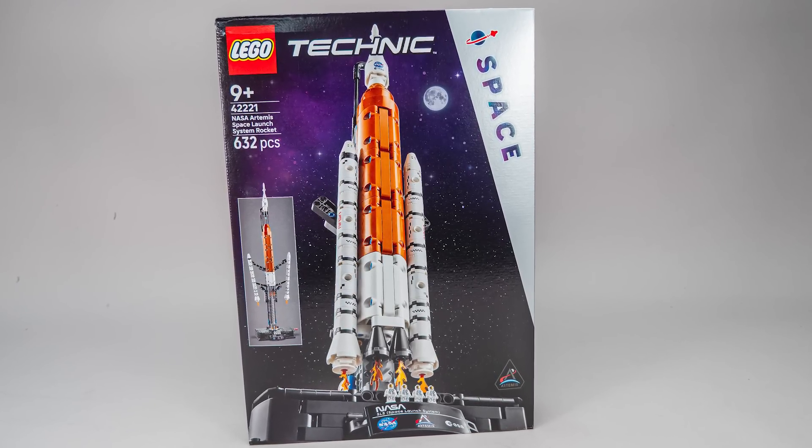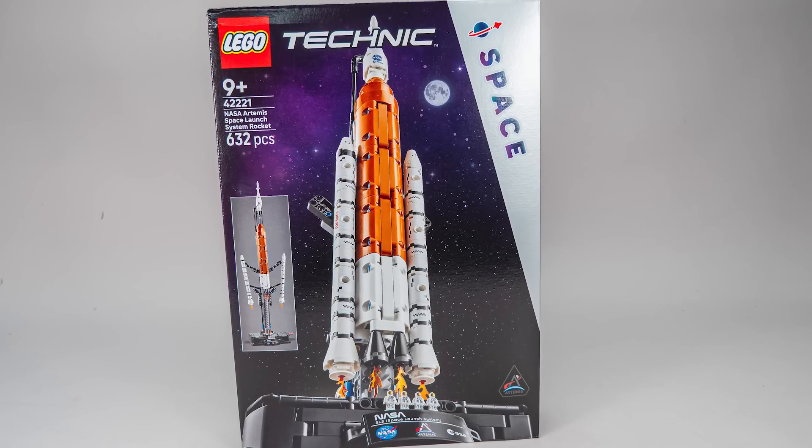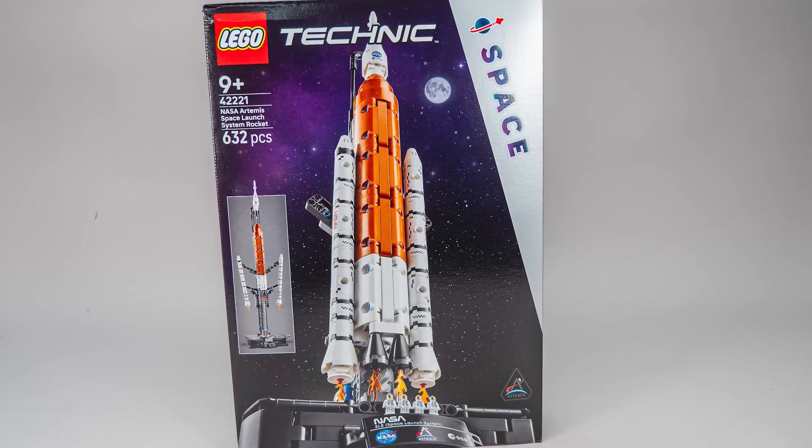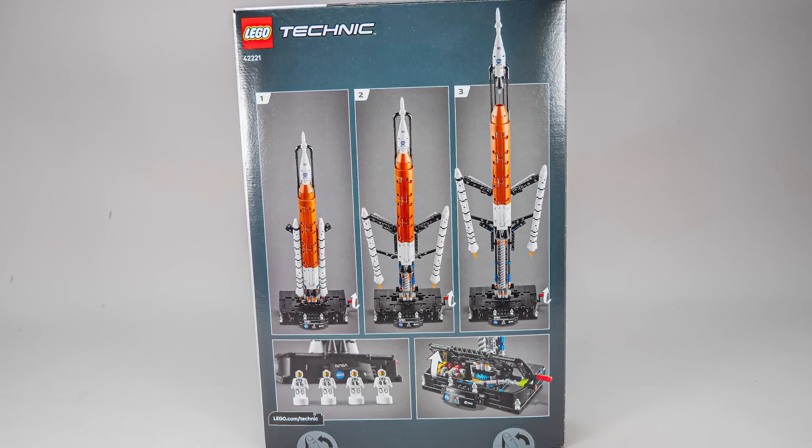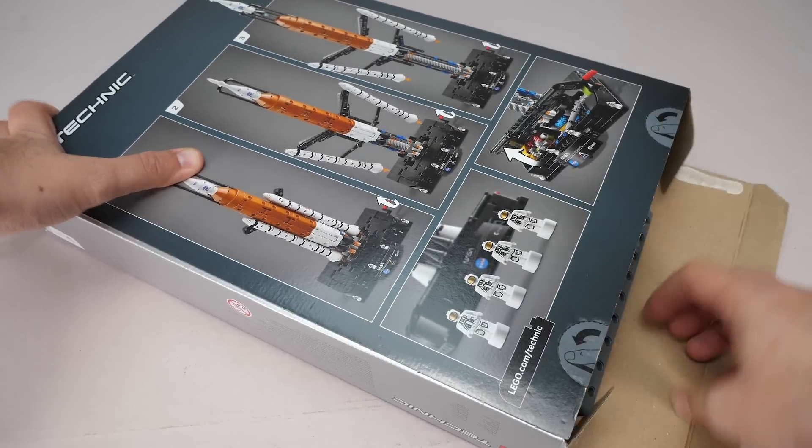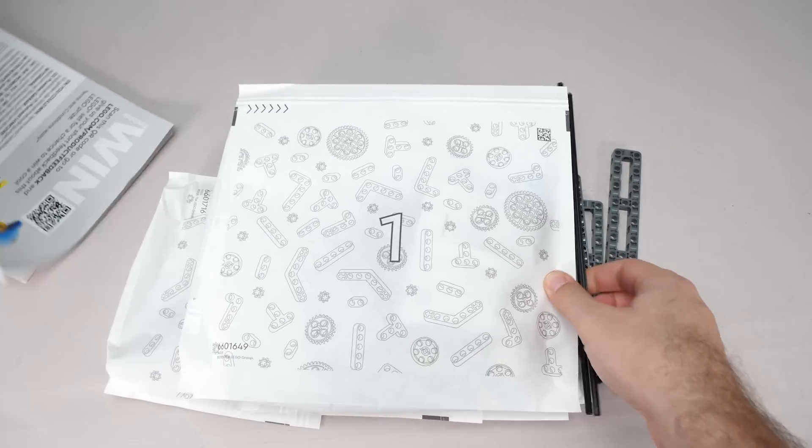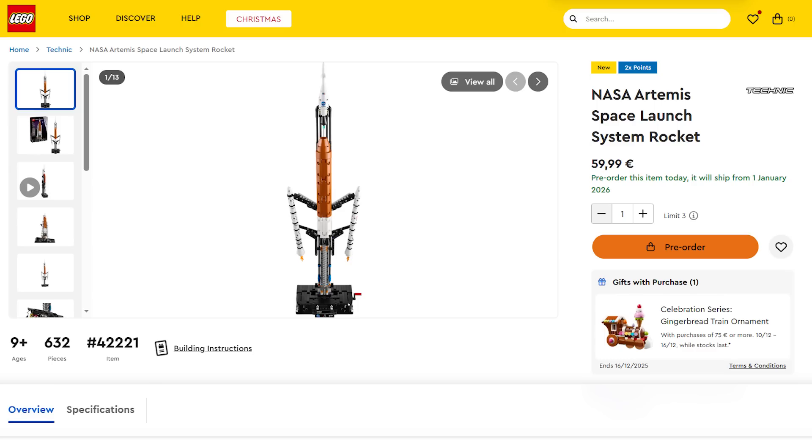The Space sub-theme returns to Technic next year which is quite interesting. On the front of the box we see the rocket and a sneak peek of its main function. The back shows the 3 stages of the launch sequence, the 4 microfigures and the workings of the base. Let's open it up. The set has 632 pieces, costs 60 euros or dollars and launches on the 1st of January 2026 and pre-orders are already available in some countries, check the link below.